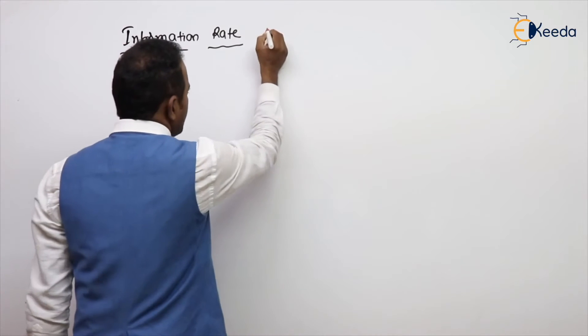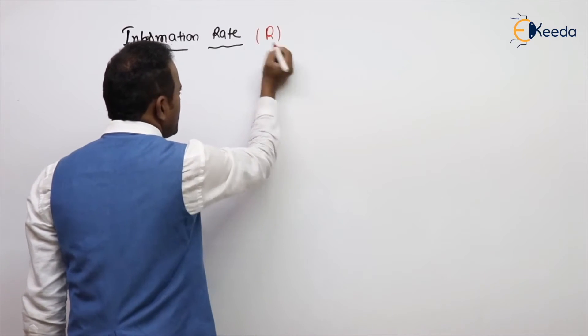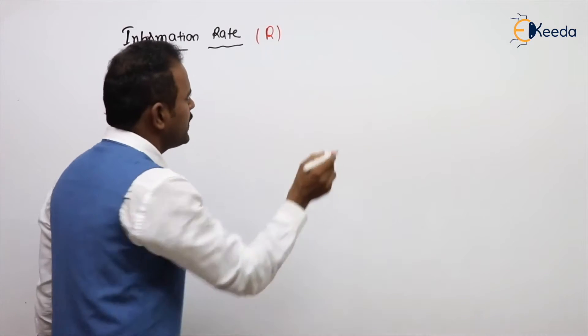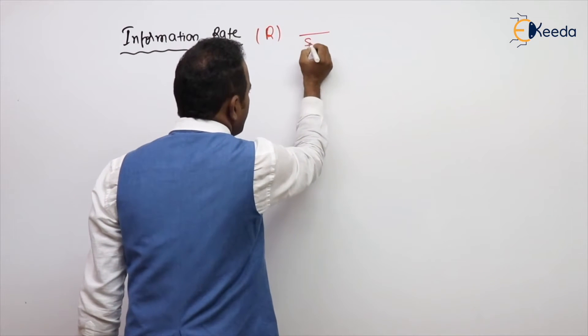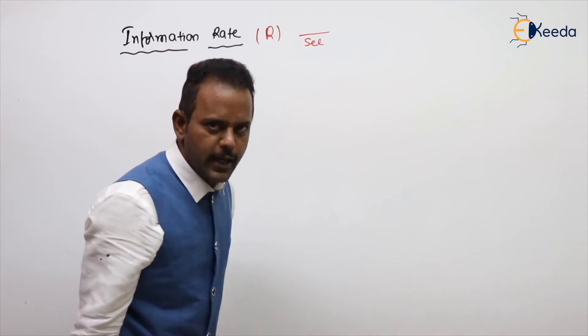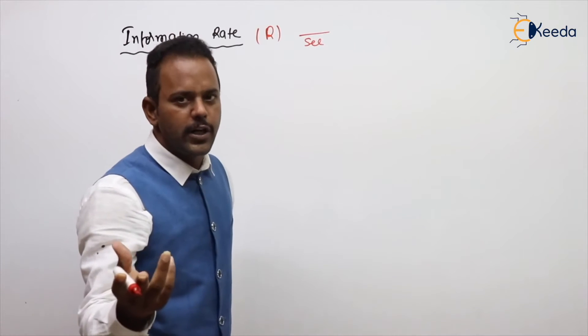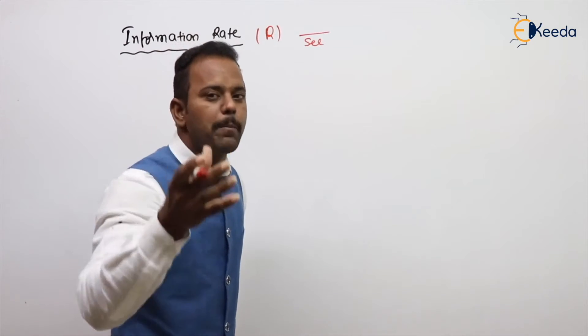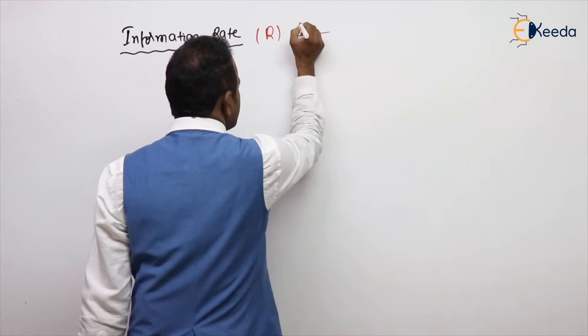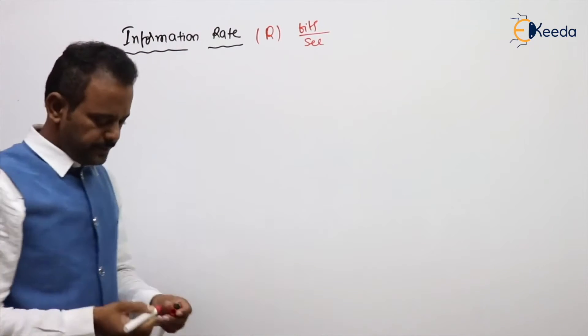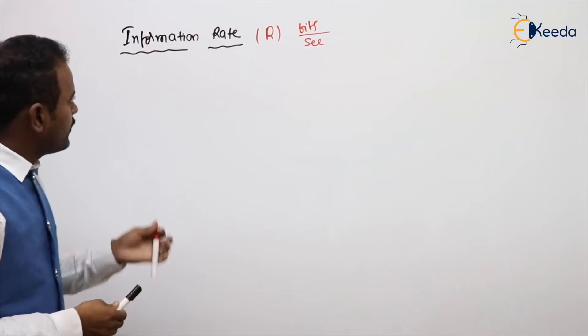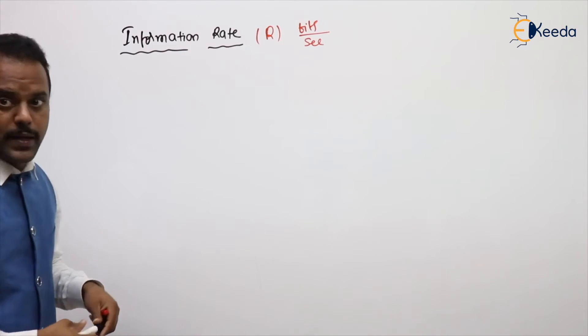Information rate is denoted with R. What is the rate R? Always rate means per second, information rate means information per second, bits per second. So information rate units are bits per second.